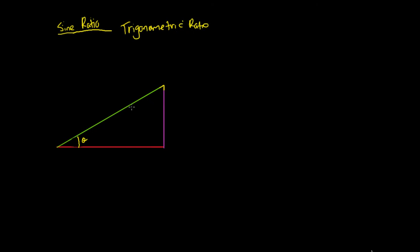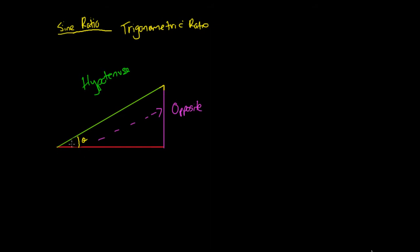Specifically, it tells us that if a triangle is arranged in such a way — so when it has an angle of theta — if it has a certain ratio between its opposite side (which is the side opposite the angle) and its hypotenuse, which is the longest side.